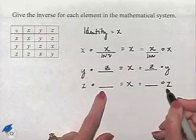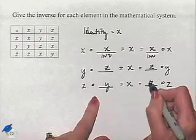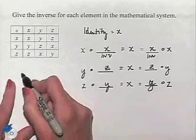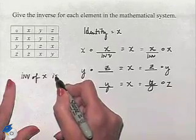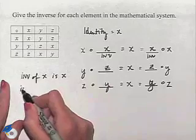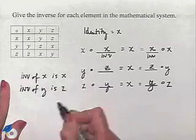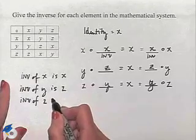Now, that kind of takes care of the next line because we can see that z and y are going to be inverses of each other. So we find out that the inverse of x is x, and the inverse of y is z, and of course, then the inverse of z is y.